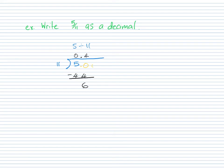And then we can keep going. We add a 0 and bring it down. And then we have to ask ourselves, how many times does 11 go into 60? And 11 goes into 60 5 times. So we have 5, we multiply 5 by 11, and get 55. So the remainder in this case is 5.